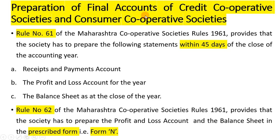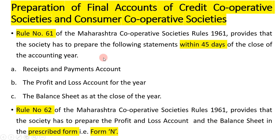Next, we will move to the preparation of final accounts of credit cooperative society and consumer cooperative society. Preparation of final accounts means financial statements. In financial statements, we have profit and loss account and balance sheet. Rule number 61 of Maharashtra Cooperative Society Rule 1961 provides that the society has to prepare the financial statements within 45 days of the close of the accounting year.